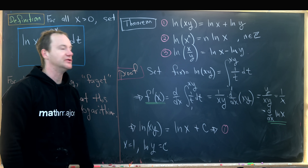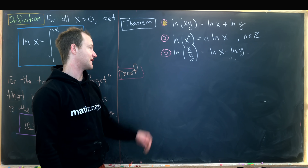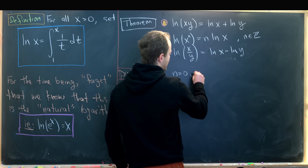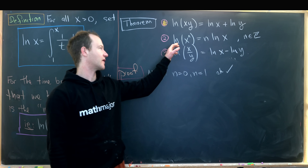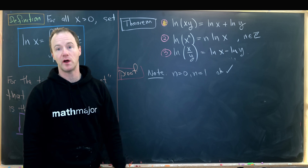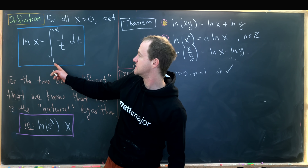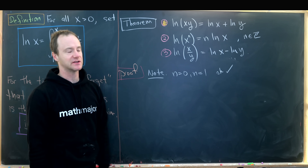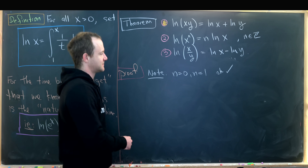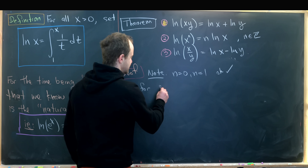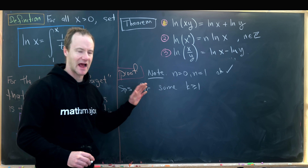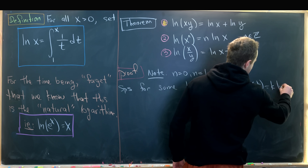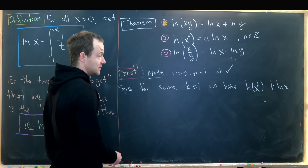Now we'll prove property 2 using induction. First note the base cases: n = 0 gives ln(x^0) = ln(1) = 0, which matches 0 · ln(x); and n = 1 gives ln(x^1) = 1 · ln(x). Both are fine. Now suppose for some k ≥ 1 that the natural log of x^k equals k times the natural log of x — this is our induction hypothesis.